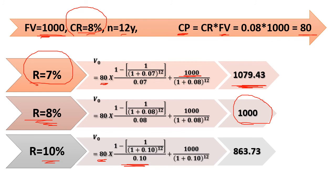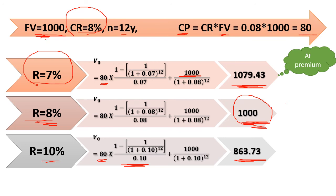Since the required rate of return exceeds the coupon rate, bond value of 863 dollars is less than the face value of 1,000, so this bond sells at a discount. To summarize: if the required rate of return is less than the coupon rate, bond value is greater than face value — sell at premium. If required return equals the coupon rate, bond value equals face value — sell at par. If required return is greater than coupon rate, bond value is less than face value — sell at discount.